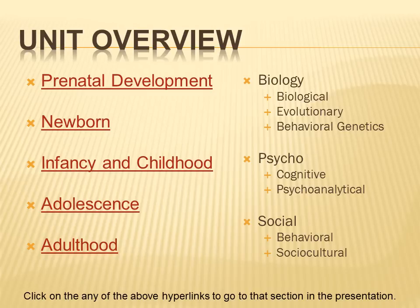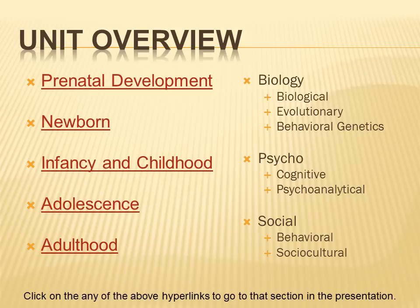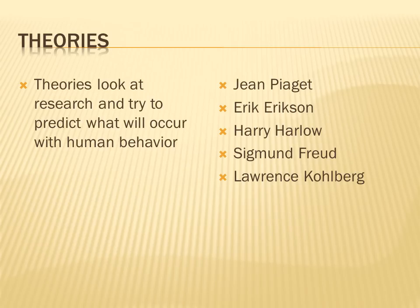The unit is broken into five big areas: prenatal, newborn, infancy and childhood, adolescence, and adulthood. We'll examine the major accomplishments at each stage, and look at how each person is growing biologically, psychologically, and socially — the biopsychosocial model. Biological influences include evolution and brain development; psychological focuses on cognition; and social looks at environmental influences.